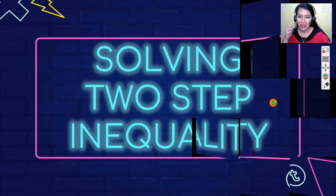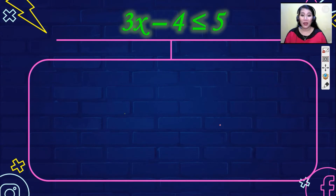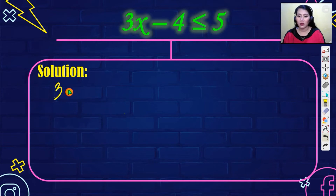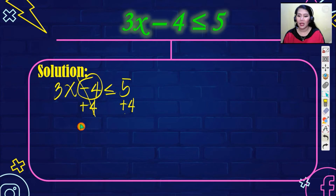Now let's have more examples solving two-step — or maybe even three-step — inequalities. Number one: 3x minus 4 is less than or equal to 5. Copy the inequality: 3x minus 4 is less than or equal to 5. We need to remove minus 4 by API, so we add 4 to both sides. The minus 4 cancels, leaving 3x is less than or equal to 5 plus 4, which equals 9.